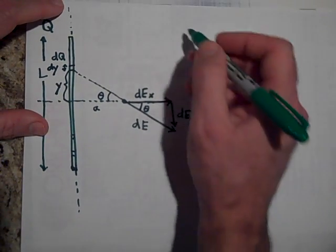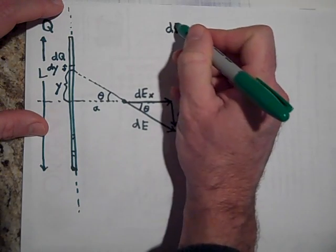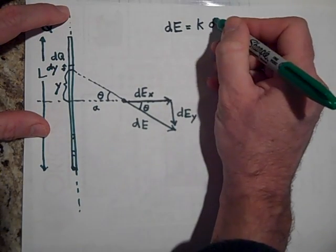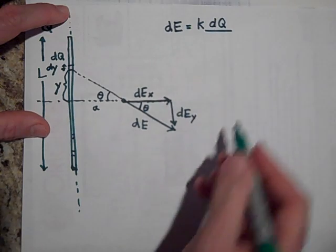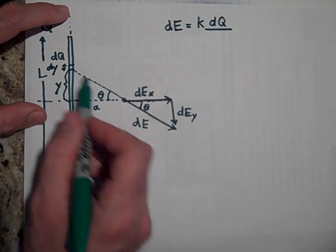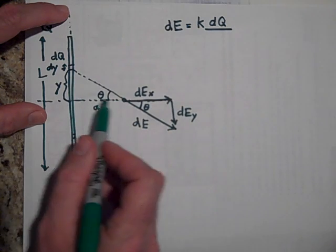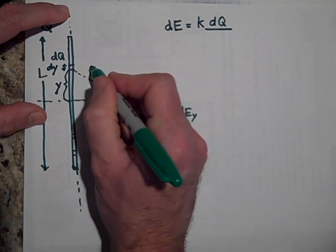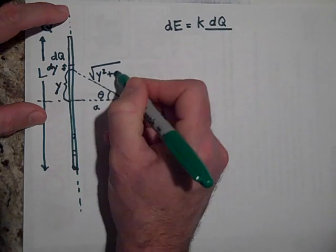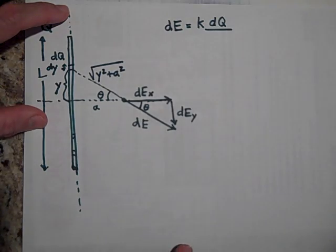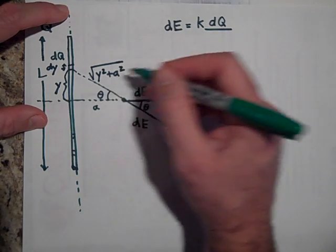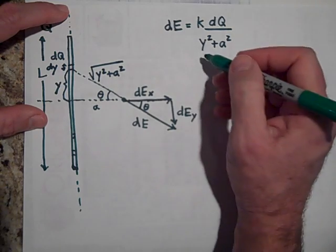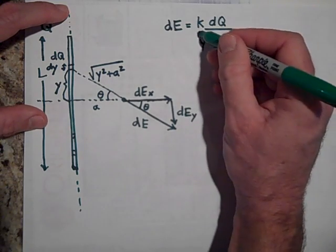So the DE, if you want to know what DE is, it's the electric field for a point charge which is k dQ over the distance between the dQ and the point. This distance is, using the Pythagorean theorem, y squared plus a squared square root it. But that gets squared, so it's y squared plus a squared and you lose the square root because it gets squared.